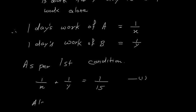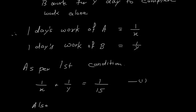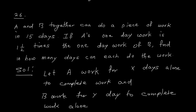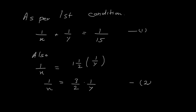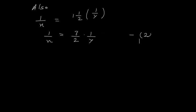As per the second condition, A's one-day work is one and a half times B's one-day work: 1/x = (3/2)×(1/y). By substitution, I replace 1/x in equation 1: (3/2)×(1/y) + 1/y = 1/15.